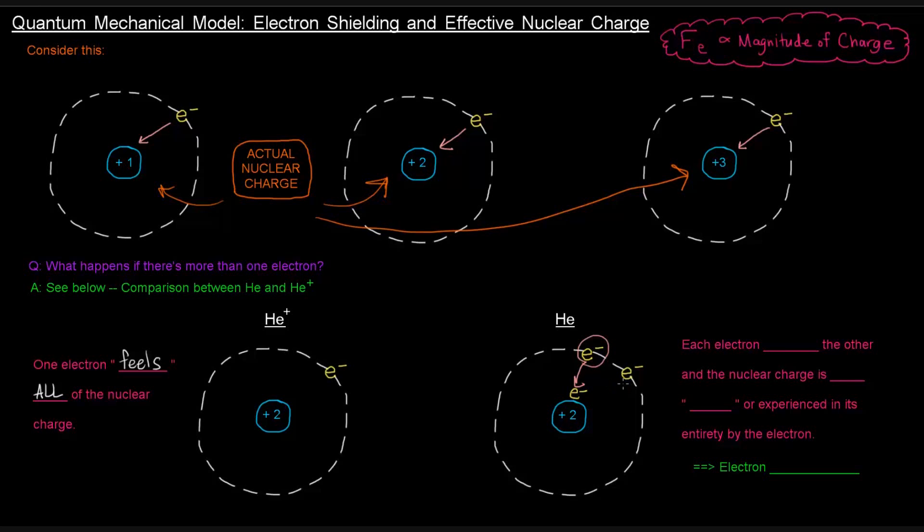This second electron is also being attracted by this nucleus. But you can imagine that if this electron, this first one here, is present there, then this second one coming in would be a problem because they would repel. That's kind of what happens. The one that's here will shield or block this one away,